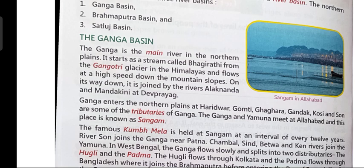When many small rivers come and join the main river, it is known as a tributary. So Gomti, Ghagara, Gandhak, Kosi, and Son are all tributaries of Ganga. The Ganga and Yamuna meet at Allahabad, and this place is known as Sangam. Sangam is the place where river Ganga and Yamuna meet.